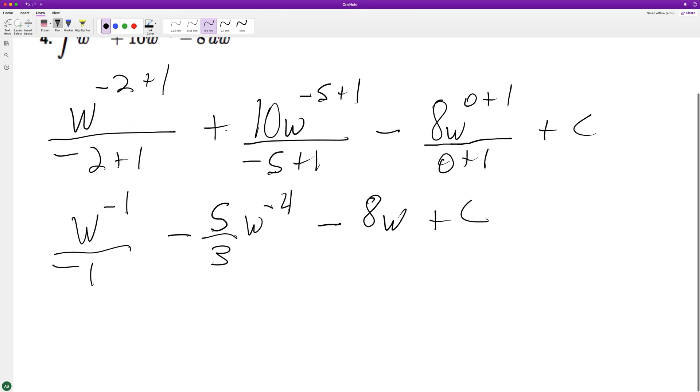That's good enough, but if you really want to you can rewrite it as negative 1 over w minus 5 over 3w to the fourth minus 8w plus C. And that's it. Alrighty, I hope this helped you out. Appreciate you watching. See you in the next video.